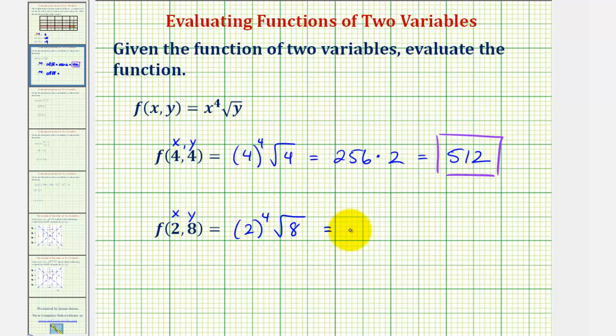Well, two to the fourth is equal to 16. We can simplify the square root of eight, since eight is equal to four times two, and the square root of four is equal to two. This would be 16 times two square root two, or 32 square root two.